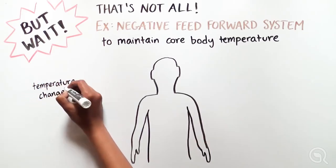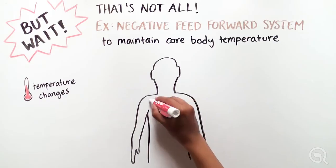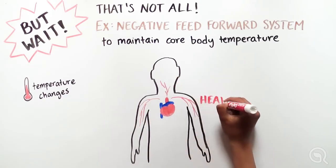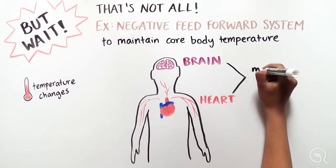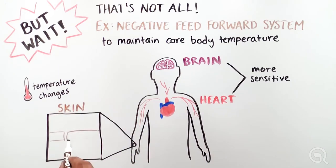A biological example is maintenance of core body temperature. Internal organs, like the heart and brain, are extremely sensitive to small temperature changes. Our skin, however, is less sensitive to environmental changes.